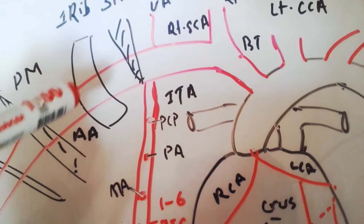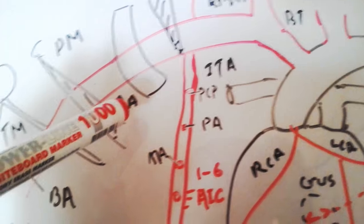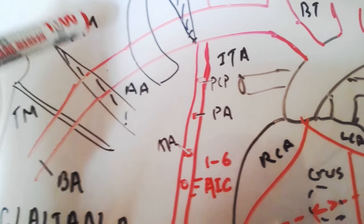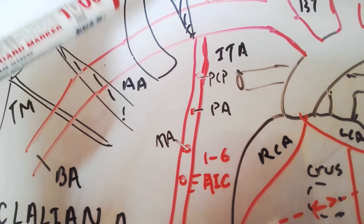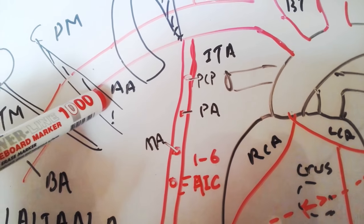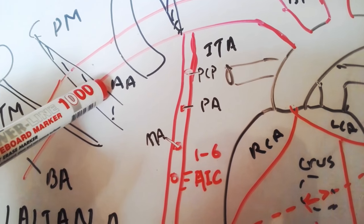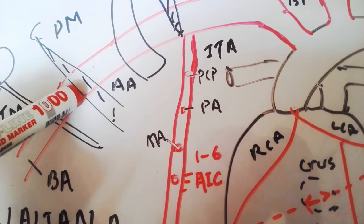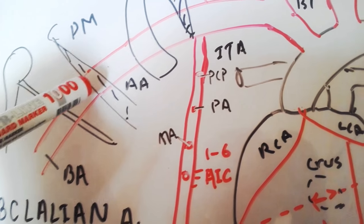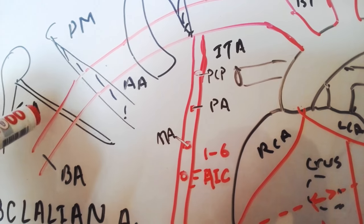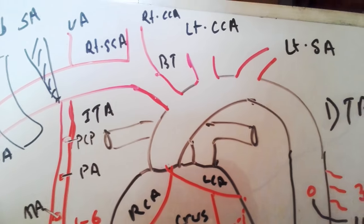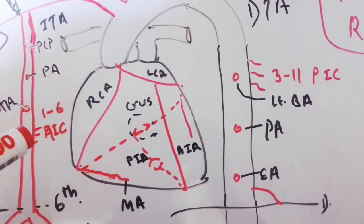When the subclavian artery crosses the first rib it becomes the axillary artery, which also has three parts divided by the pectoralis minor muscle. The first part has one branch: the superior thoracic artery. The second part has two branches: the acromiothoracic artery and the lateral thoracic artery. The third part has three branches: the subscapular artery, anterior circumflex humeral artery, and posterior circumflex humeral artery. When it crosses the teres major muscle it becomes the brachial artery.